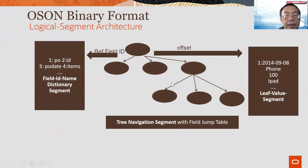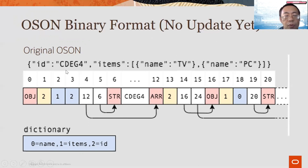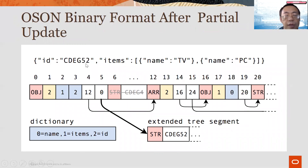Here's a logical view of OSON. It's a binary tree with a field name dictionary, and the leaf values are all packed together. Here's the linear view of OSON: the OSON dictionary contains field names like name, ID, and items, with field IDs. There is a navigable binary offset table indicating the tree navigation. Suppose you want to update a value — say update CDEG4 to CDEG52. Since the new value is longer than the original, you strike out the original and store a forwarding address to the new piece, CDEG52, appended at the end. That's considered an extended tree segment.